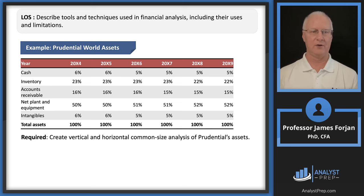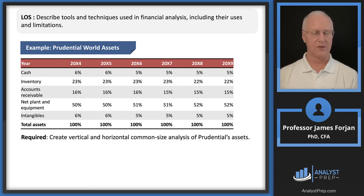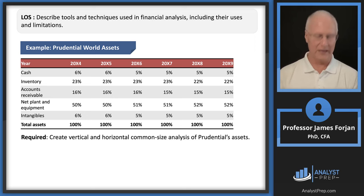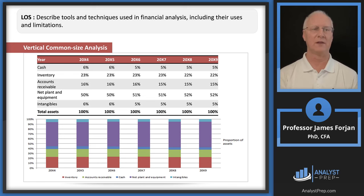One way to do this is a common size financial statement. Here's an example with Prudential's world assets over a six-year window. Instead of reporting total assets in dollar amounts, we set total assets as 100% and compute the ratio of each line item — cash, inventory, etc. — to total assets. Each column sums to 100. Looking at this, over that six-year period, nothing has really changed for this firm on its balance sheet. We can do this horizontally and vertically.